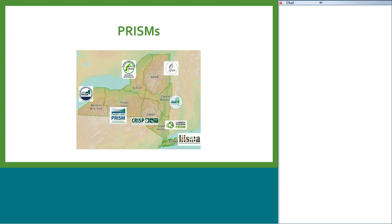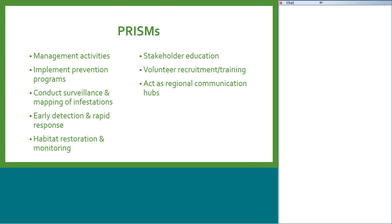We have eight PRISMs across New York State: Western New York, Finger Lakes, St. Lawrence Eastern Lake Ontario, APIPP (Adirondack Park Invasive Plant Program), Capital MoHawk, Catskill Regional Invasive Species Partnership, Lower Hudson, and LISMA (Long Island Invasive Species Management Area). If you're curious which PRISM you're in, visit dec.ny.gov. This is really important for our mapping challenge.